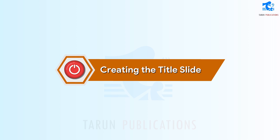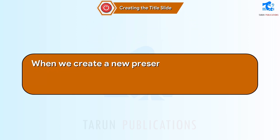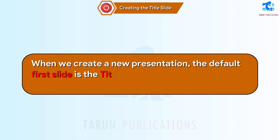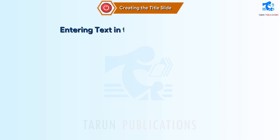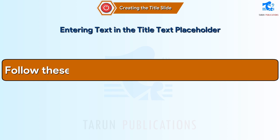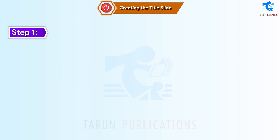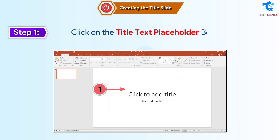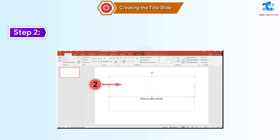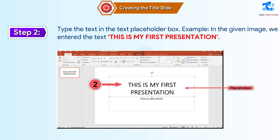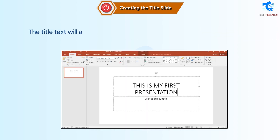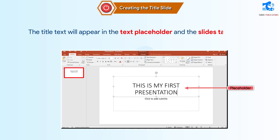Creating the Title Slide. When we create a new presentation, the default first slide is a title slide. The title slide has a text placeholder where we can enter the text. Entering text in the Title Text Placeholder: Follow these steps to add text in a placeholder. Step 1: Click on the Title Text Placeholder box. Step 2: Type the text in the Text Placeholder box. For example, we entered the text 'This is my first presentation.' The title text will appear in the Text Placeholder and the Slides tab as well.